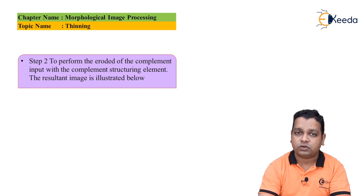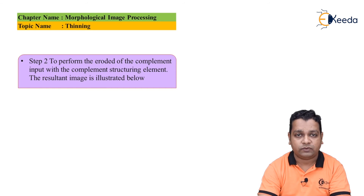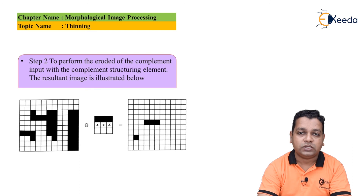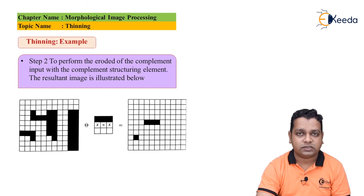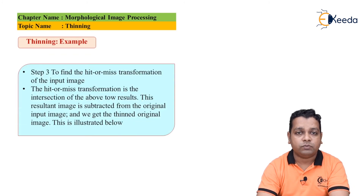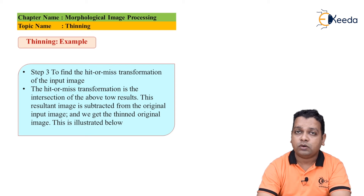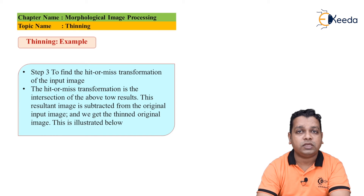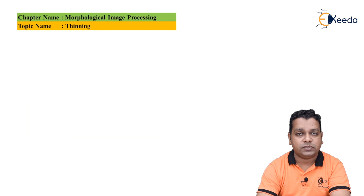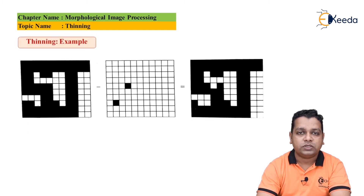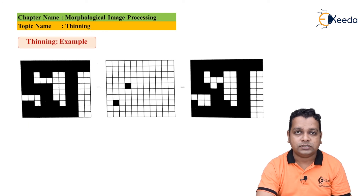In step 2, we perform the erosion of the complement of the input and the complement of the structuring element. Both complements are taken and the corresponding eroded image — again a local minima — is obtained on the right-hand side. In step 3, we find the hit-or-miss transformation of the input image, which is the algorithm for template matching of binary types. The hit-or-miss transformation is the intersection of the two results just obtained. This resultant image is then subtracted from the original input image to get the thinned image, as illustrated in the next figure showing the subtraction and the result on the right-hand side.